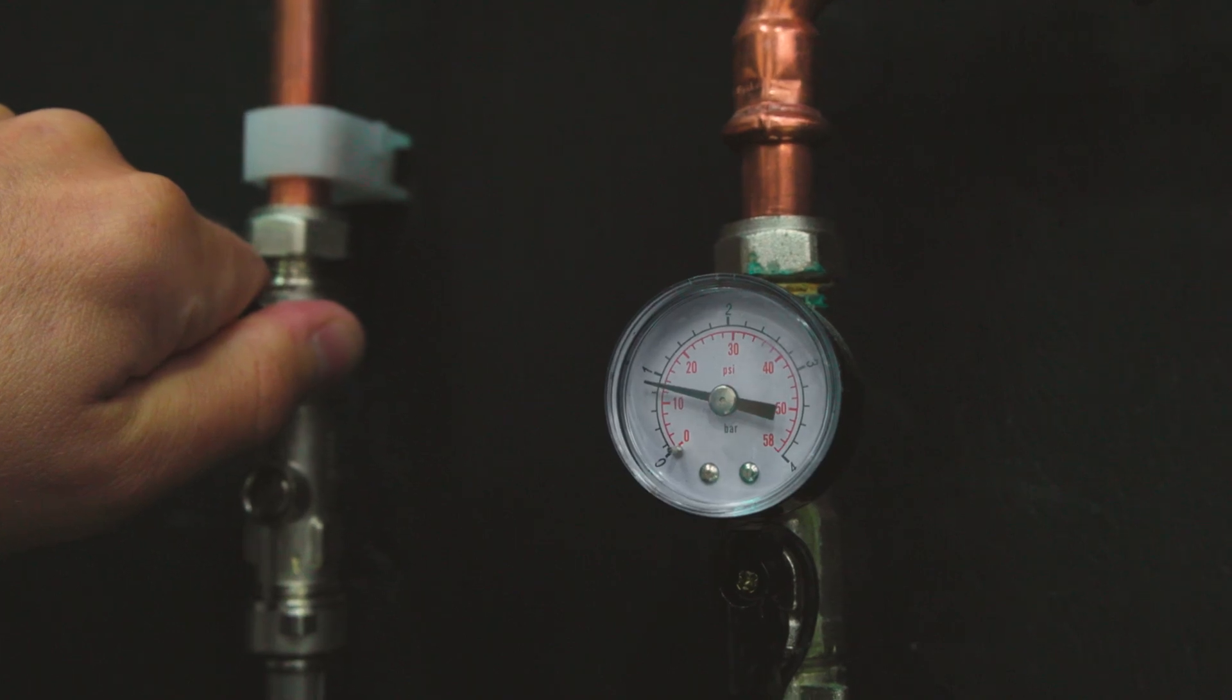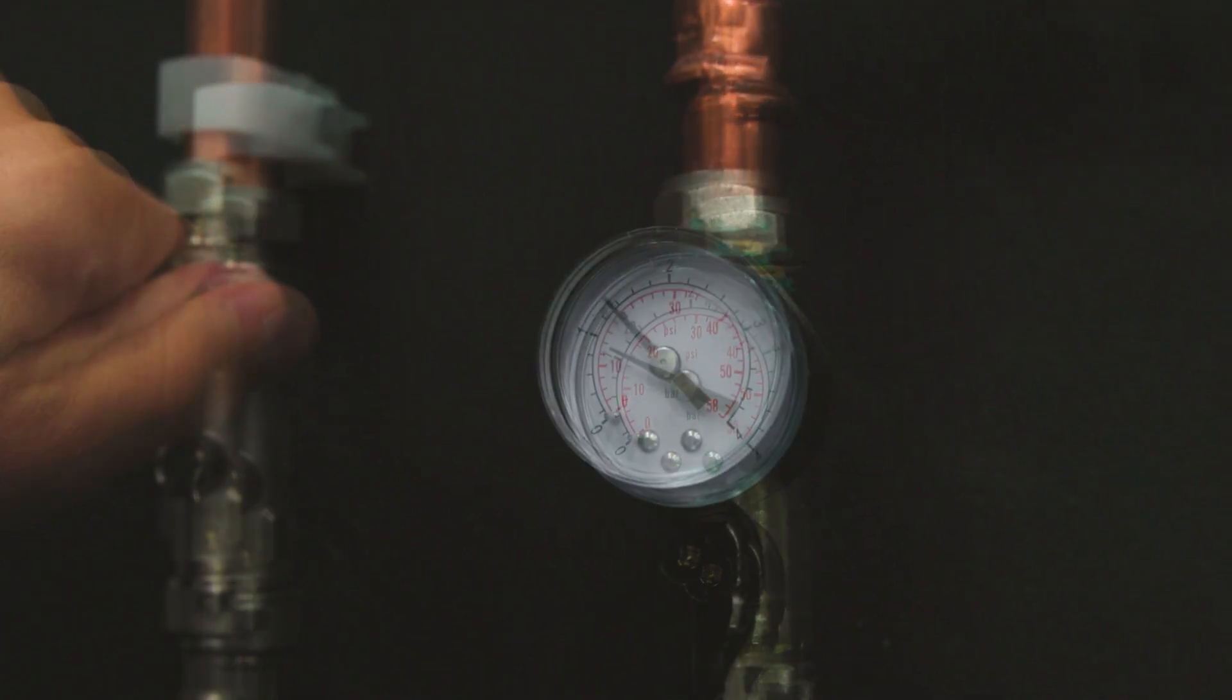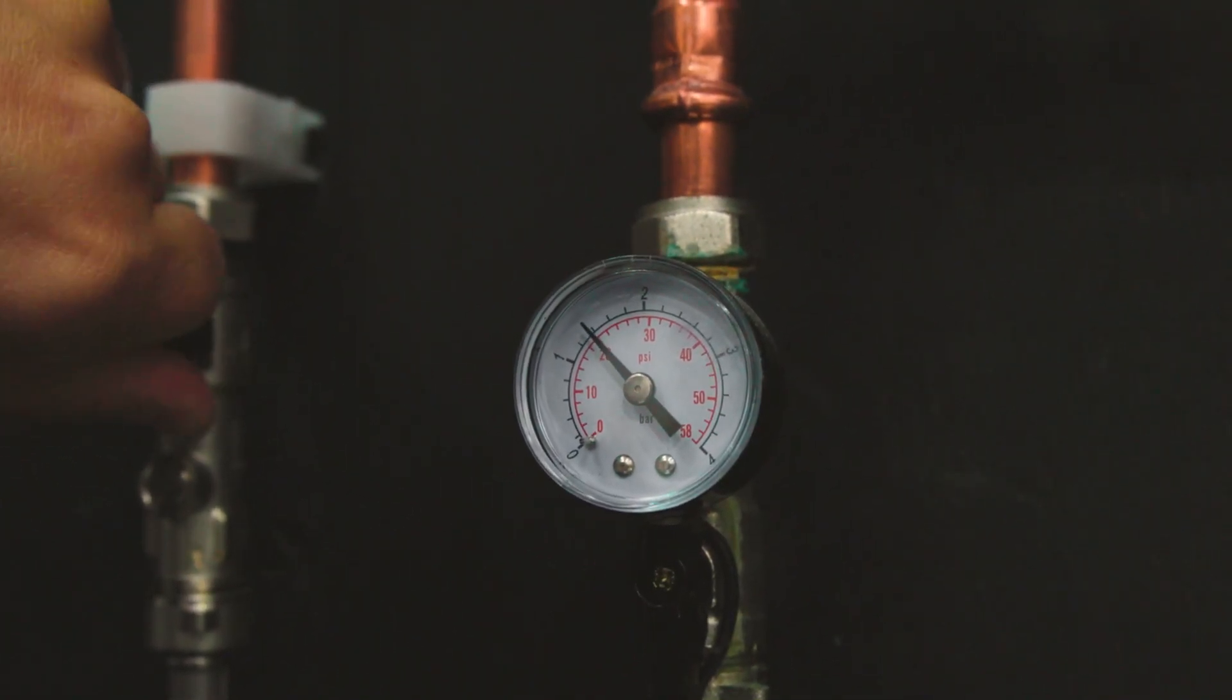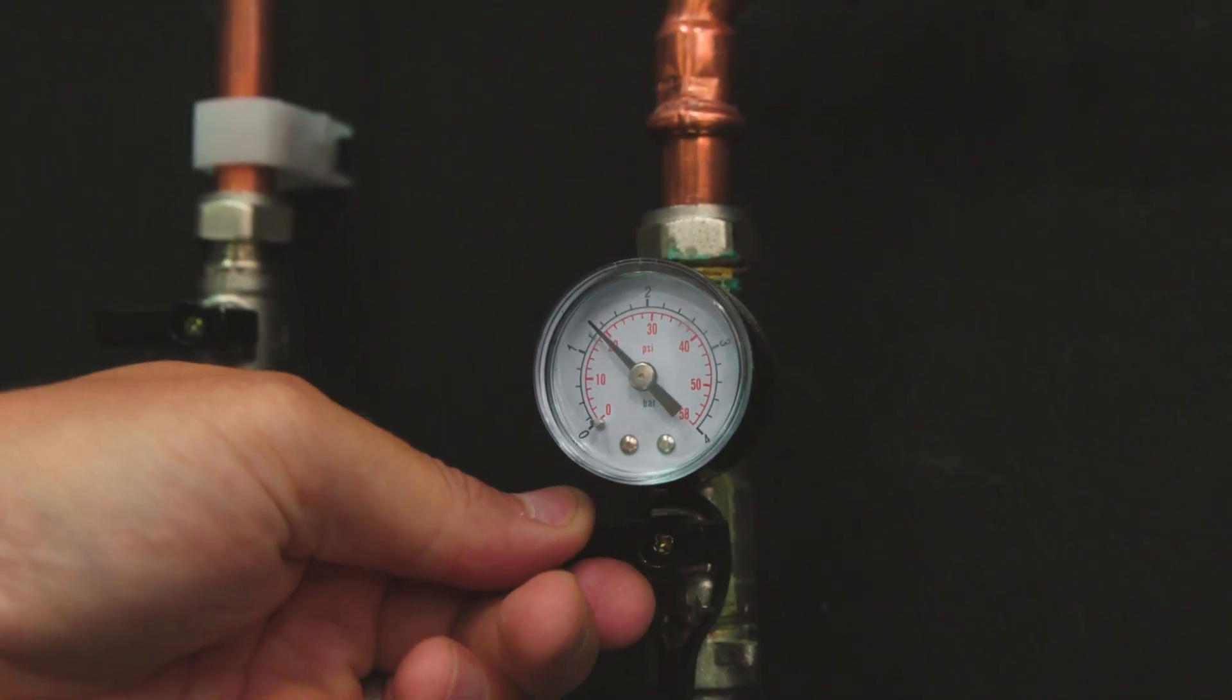This will slowly top up the pressure until it's between 1 and 1.5 bar. Once you're done, just close both filling loop levers.